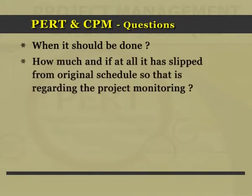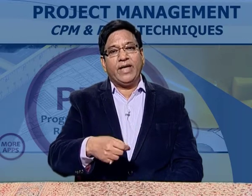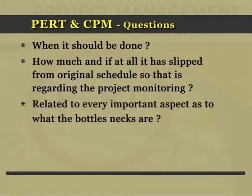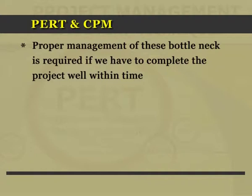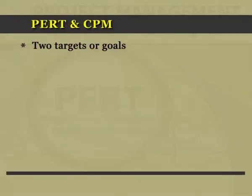The second question relates to how much the project has slipped from the original schedule — that is project monitoring. We will know whether the project is going as per the original schedule or has deviated, and make efforts to put it back on track. The third question is about bottlenecks; proper management of bottlenecks is required to complete a project well within time. The last aspect is what you might drop to save time, since every project has two goals: a time goal and a cost goal.